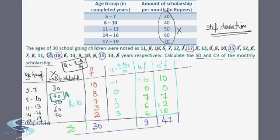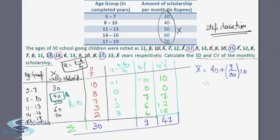Now we are ready to calculate the mean and standard deviation. The mean by the step deviation method is: x̄ = a + (Σf·u / Σf) × h = 40 + (9/30) × 10 = 40 + 3 = 43. So the arithmetic mean x̄ = 43 rupees.